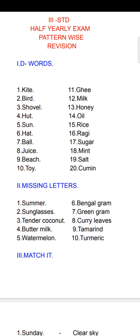Roman one, words. First one: kite, K-I-T-E. Second one: bird, B-I-R-D. Third one: shovel, S-H-O-V-E-L. Here we have to pronounce O-S-E.